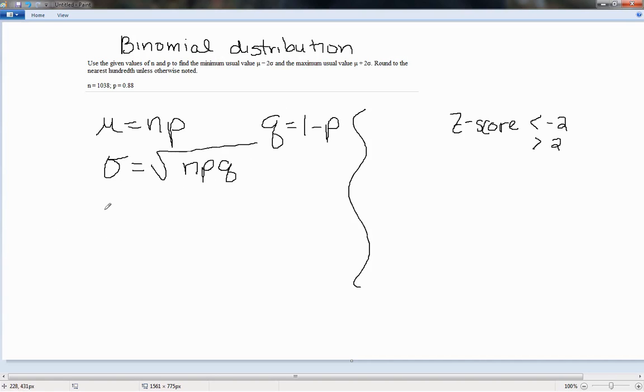So if we want to find this range of usual values, we want to go from the mean minus 2 times the standard deviation, and our highest would be the mean plus 2 standard deviations. So here we just need the mean and the standard deviation and we can find the lowest value and the highest value, and then we can judge any value whether it's usual or unusual if it's between those or not between those.